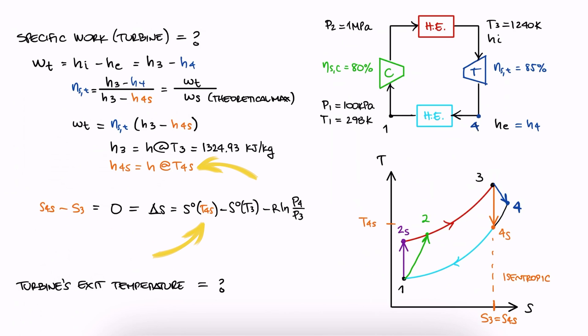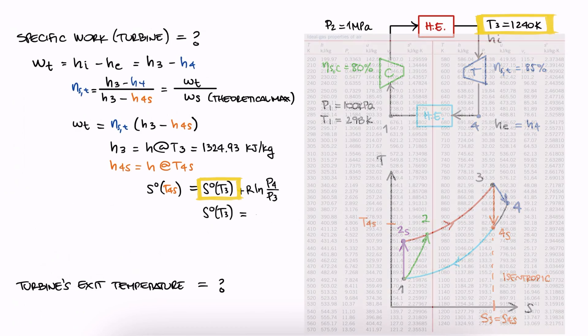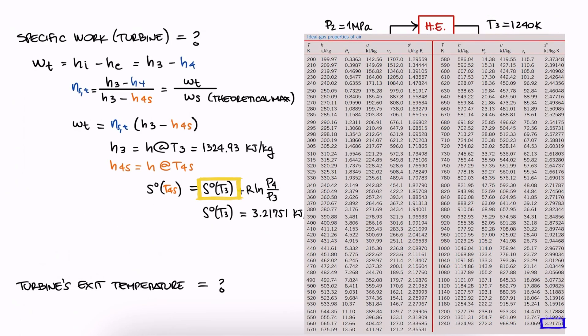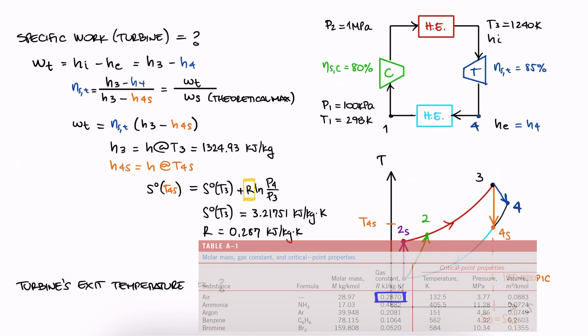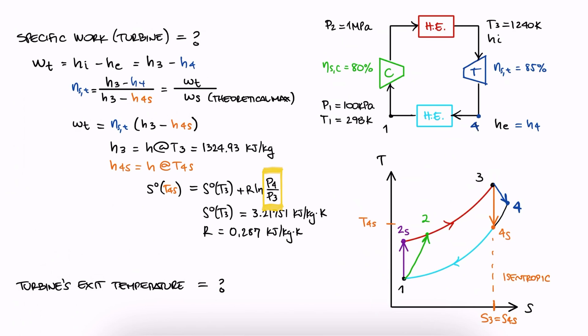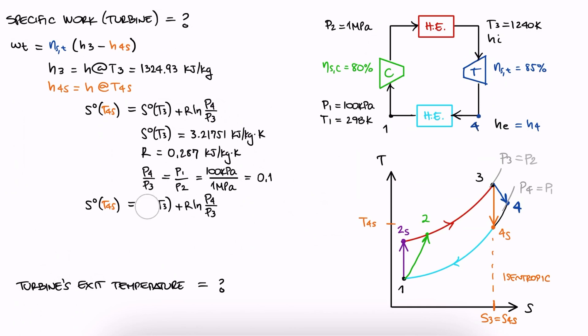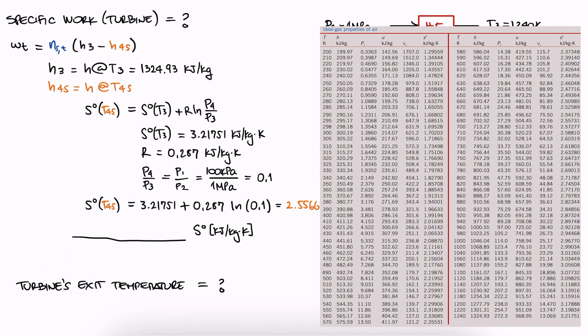We're looking for T4s. T4s will be the temperature that corresponds to the reference entropy at 4s. Therefore, we want to solve for the reference entropy of T4s here. We'll need the reference entropy at T3, which we can get from the table, the gas constant for air, and the ratio between P4 and P3, which is the same as P1 and P2. We substitute the values to find reference S for T4s, and we interpolate to go from that reference entropy value to T4s.